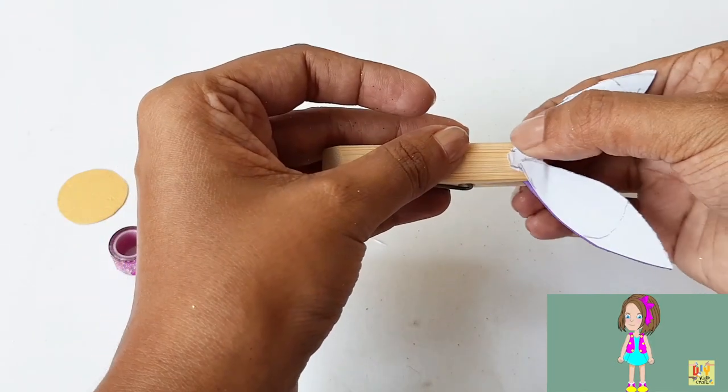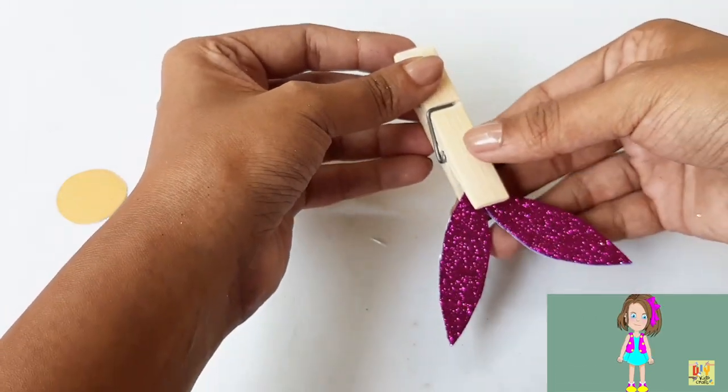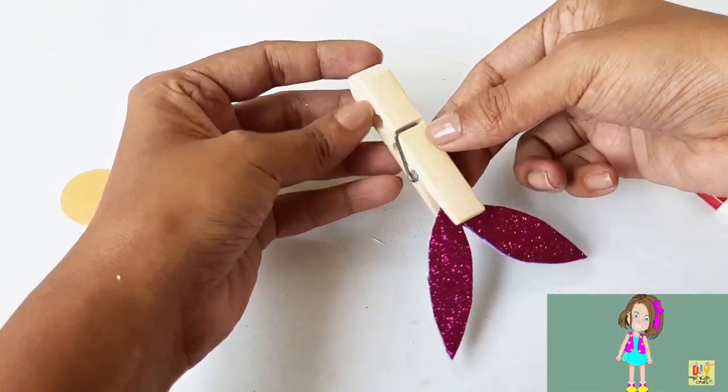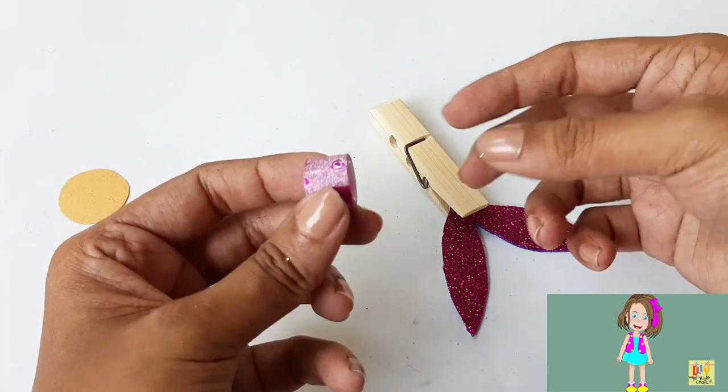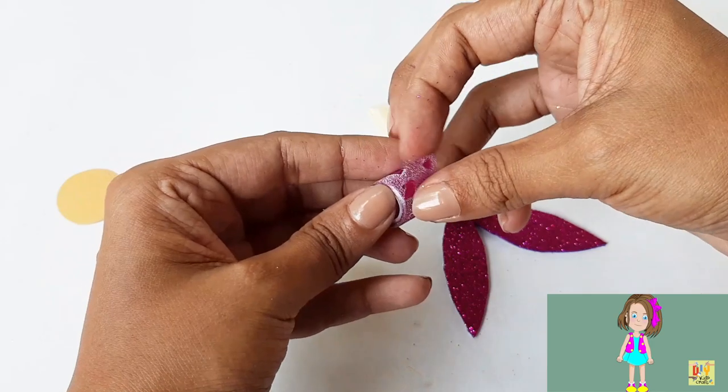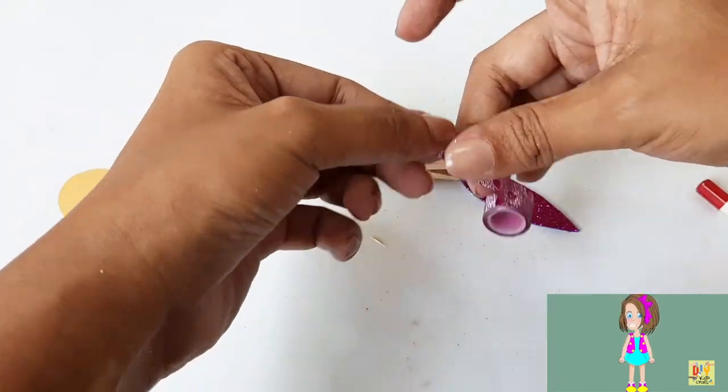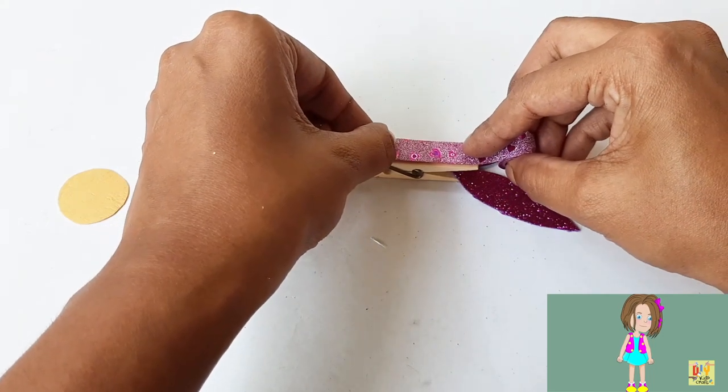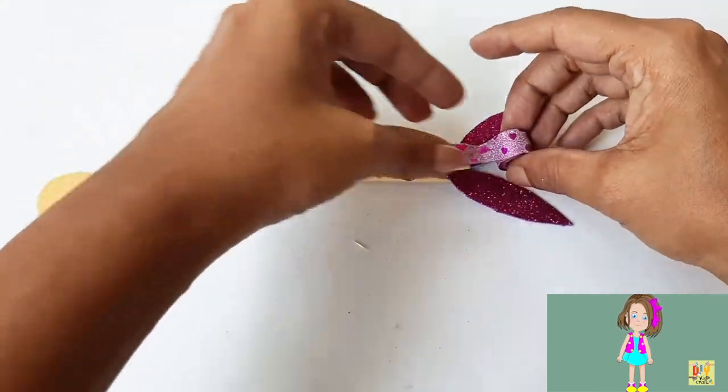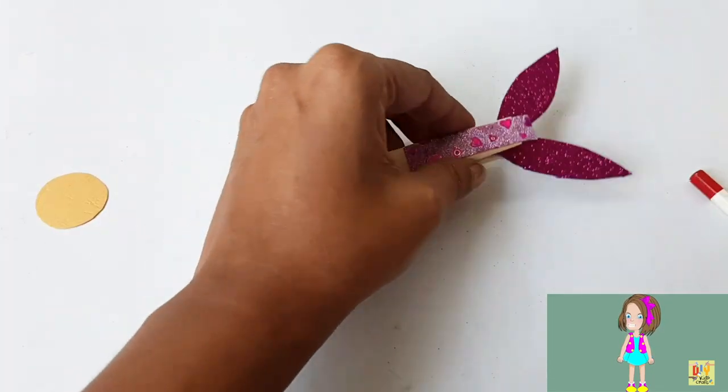So the clothespin is gonna be our mermaid's body. Let's set it aside. Then using this decorative tape, let's place it into half of our clothespin like that. I chose a heart decoration.